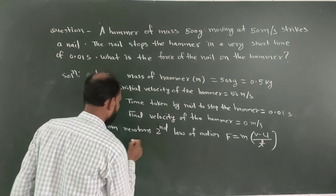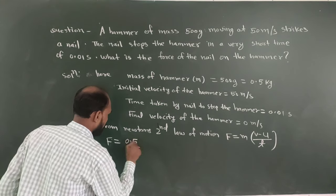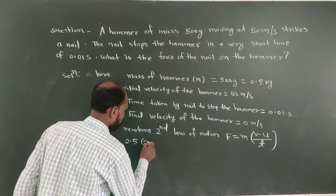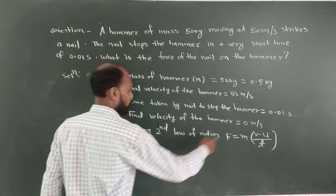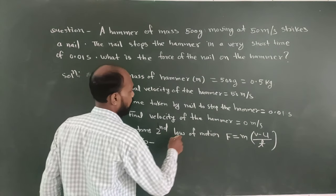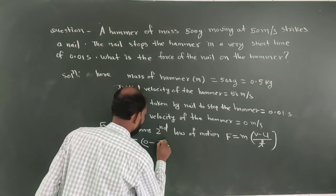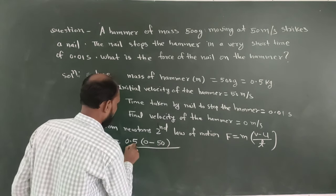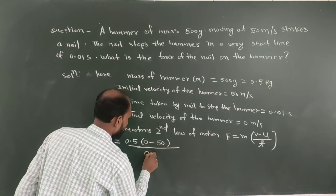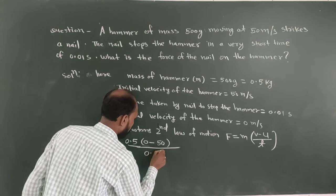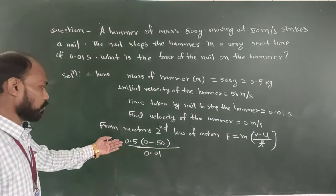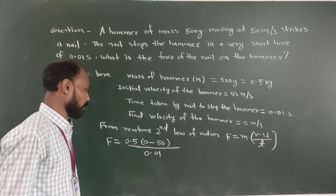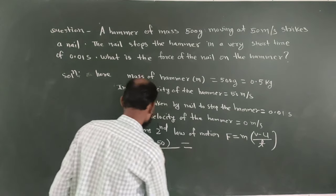Chaliye put karte hain. Toh F equal to kya ho jayega? Mass kitna diya hai hamare paas? 0.5 — theek hai, 0.5. Uske baad velocity: final velocity kya diya hai? 0 — kyunki hammer ruk jaata hai. Initial velocity hamare paas kya diya hai? 50 meter per second, toh yeh jayega 50. Aur time taken kitna diya hamare paas? 0.01. Ab yeh saare ko solve karenge.